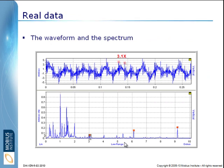Here is a real example of actual data from a machine that describes the same thing. In the time waveform, we can see a low frequency which is the shaft rate, and then repetitive impacts. Down in the spectrum, this peak coincides with the shaft rate, and the one marked in red coincides with the outer race defect frequency — the rate at which the defect is getting hit. The peaks over here are harmonics, or multiples, also related to that rate.